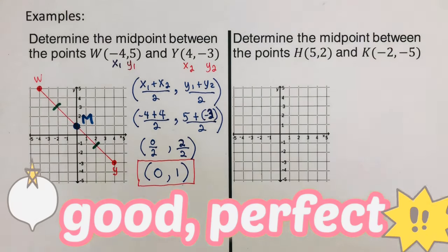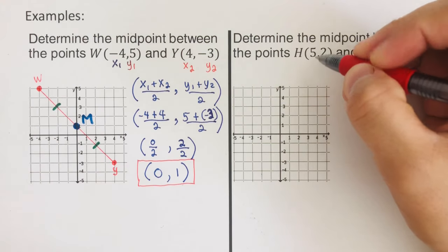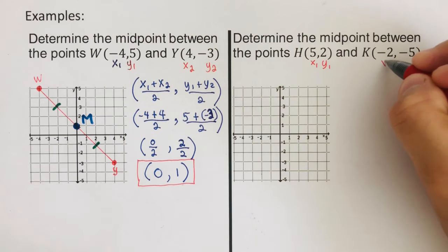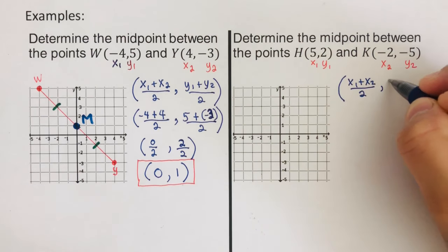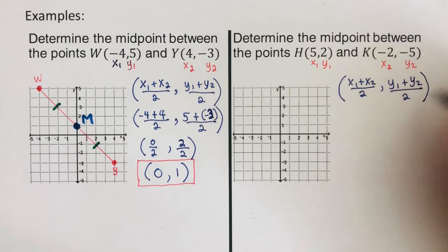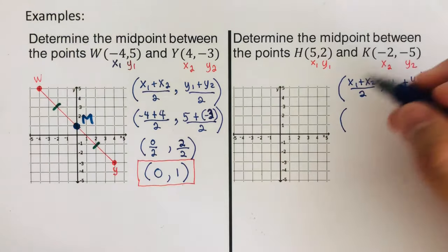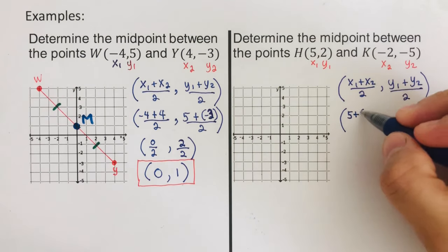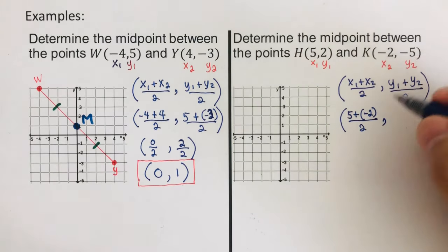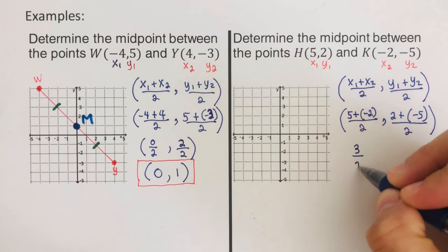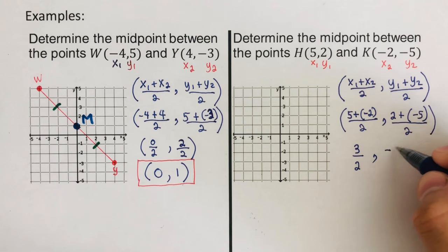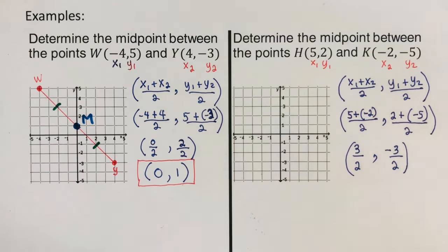Now let's move on to the third example. The first step is to label the two points: x₁, y₁ and x₂, y₂. We plug into the midpoint formula: x₁ plus x₂ over 2, and y₁ plus y₂ over 2. Our x₁ is 5 plus x₂ which is -2, over 2. Our y₁ is 2 plus y₂ which is -5, divided by 2. Simplifying: 5 plus -2 is 3 over 2, and 2 plus -5 is -3 over 2.